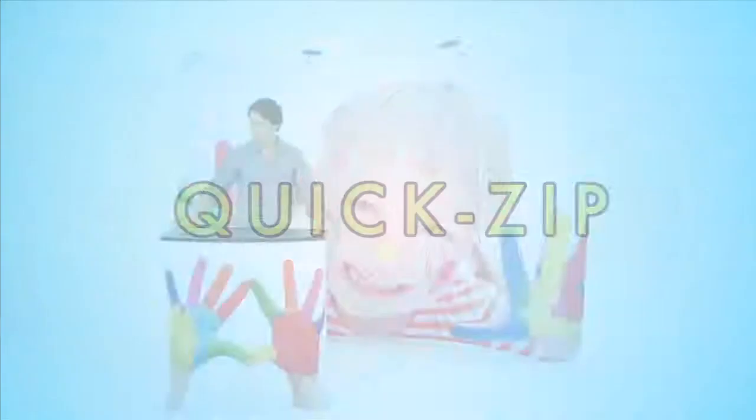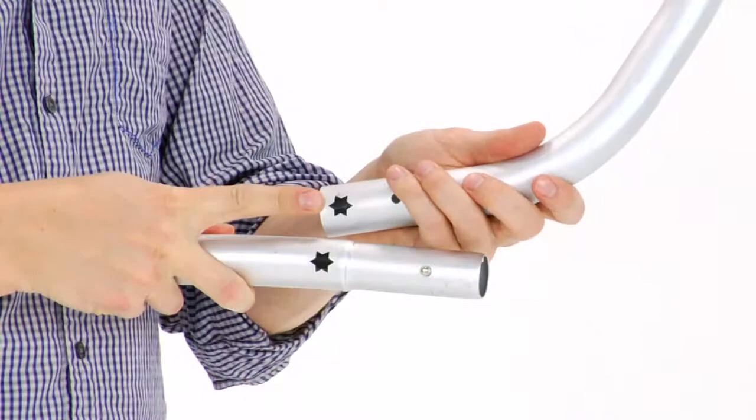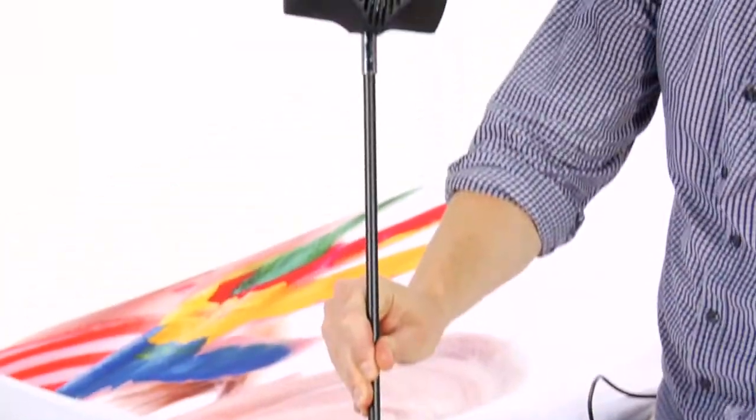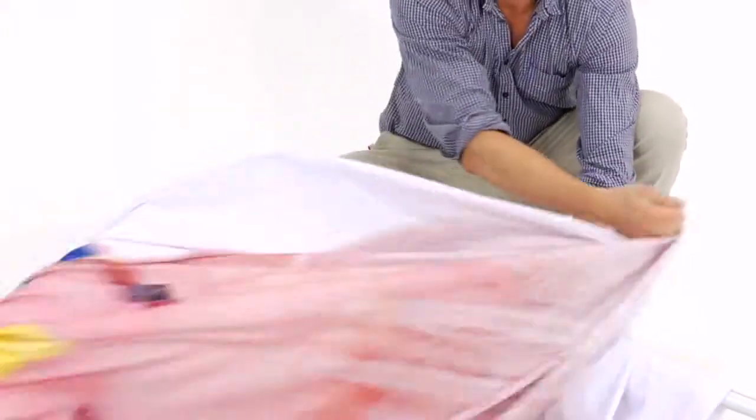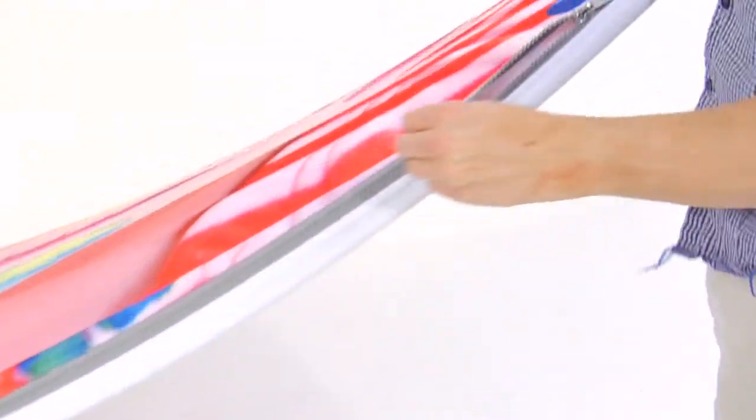Our Quick-Zip Tension Fabric Display features a fast and easy snap-tube frame, two LED lights, and a high-resolution seamless fabric graphic that simply secures around the frame in just seconds.